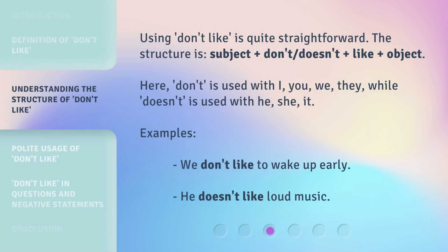Using "don't like" is quite straightforward. The structure is: subject + don't/doesn't + like + object. Here, "don't" is used with I, you, we, they, while "doesn't" is used with he, she, it. Examples: "We don't like to wake up early." "He doesn't like loud music."